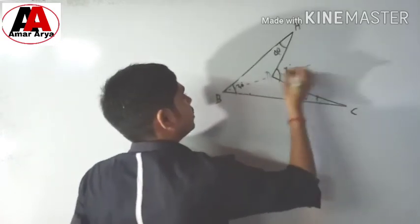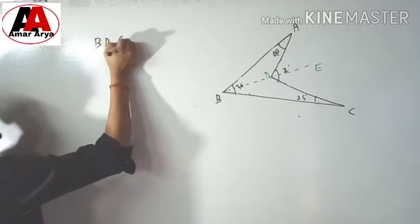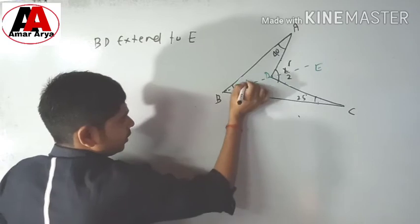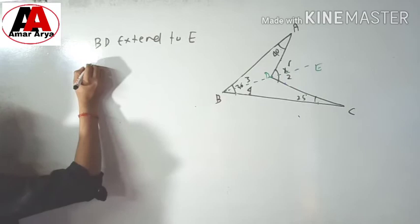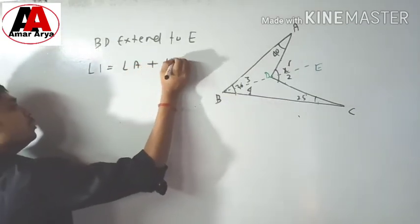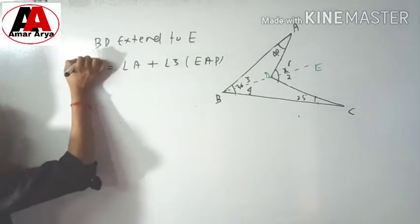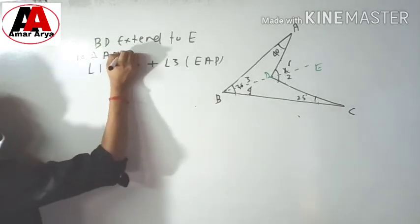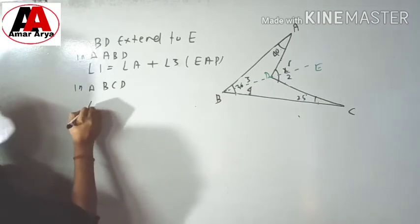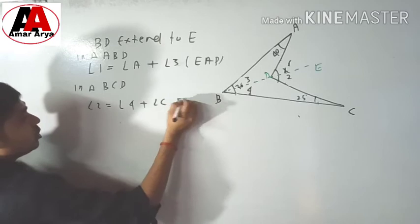Extend BD to point E. In triangle ABD, we can write: angle 1 equals angle A plus angle 3, due to the Exterior Angle Property. Again, in triangle BCD, we can write: angle 2 equals angle 4 plus angle C, which is 25 degrees. This is also due to EAP.